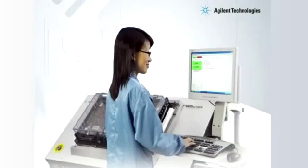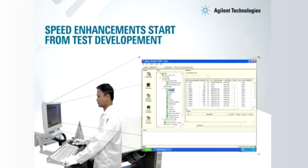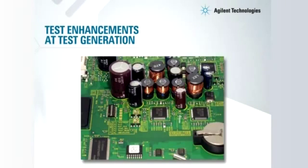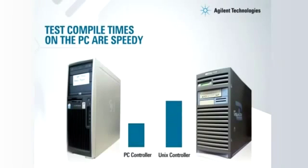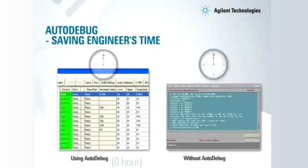Speed with a new Medalist i3070 — you can do things faster right from test development. Tests are optimized to reduce test time. Resistor and capacitor tests, which generally make up half of a board's total components, are enhanced with increased efficiency of the test measurement algorithms. Compared with a traditional UNIX controller, the compile times for tests are now halved.